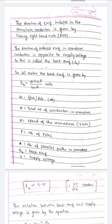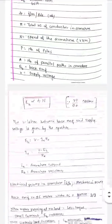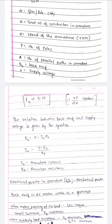V, supply voltage. EB proportional to phi N. Z, P upon 60A constant. The relation between back EMF and supply voltage is given by the equation: